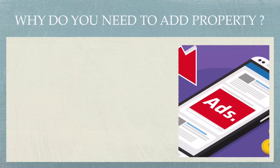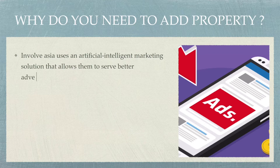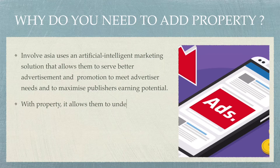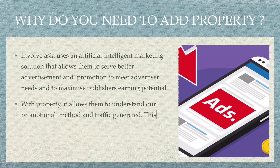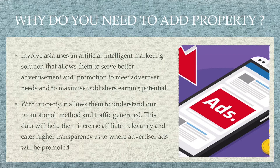Why do you need to add a property? InvolveAsia uses an artificial intelligent marketing solution that allows them to serve better advertisement and promotion to meet advertiser needs and to maximize publisher's earning potential. With a property, it allows them to understand our promotional method and traffic generated. This data will help them increase affiliate relevancy and cater higher transparency as to where advertiser ads will be promoted.